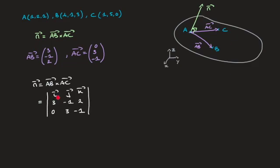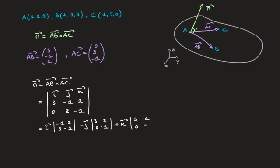To calculate this, I work along the top row. That's equal to i times the 2×2 determinant of (negative 1, 2; 3, negative 1), minus j times the 2×2 determinant of (3, 2; 0, negative 1), plus k times the 2×2 determinant of (3, negative 1; 0, 3). Calculating each of these: i times (negative 1 times negative 1, which is 1, minus 3 times 2, so that's 6), minus j times (3 times negative 1, so that's negative 3, minus 0 times 2, which is 0), plus k times (3 times 3, which is 9, minus 0 times negative 1, which is 0).